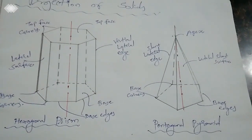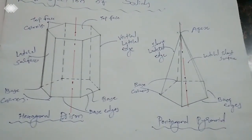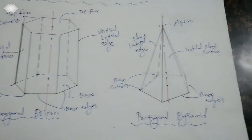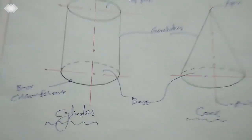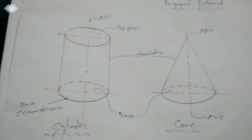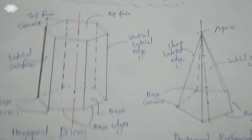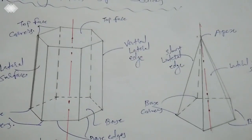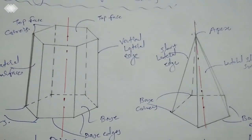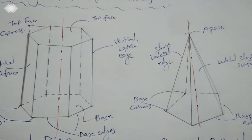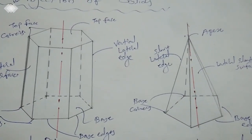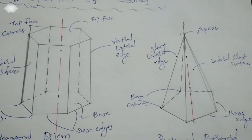The first one is prism. The second one is pyramid. The third one is cylinder. And the last one is cone. Now just see what is the difference between prism and pyramid.